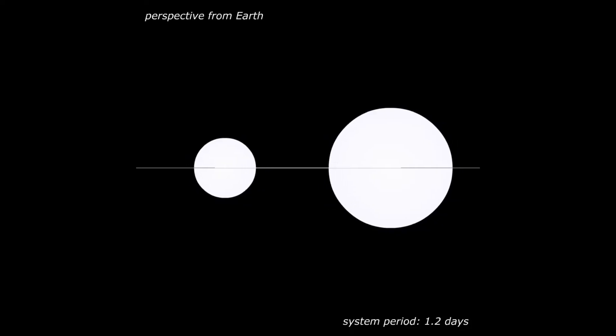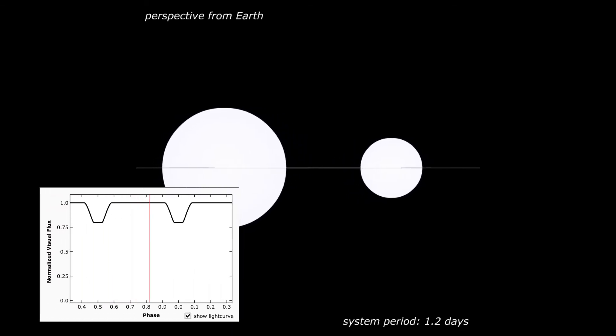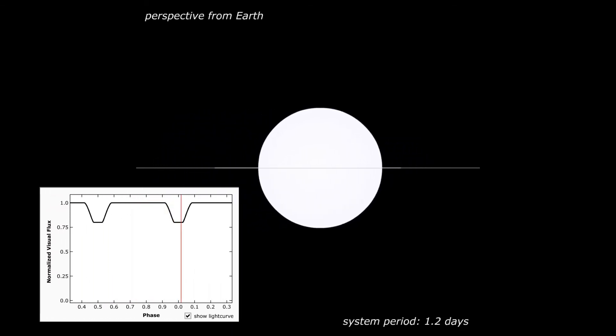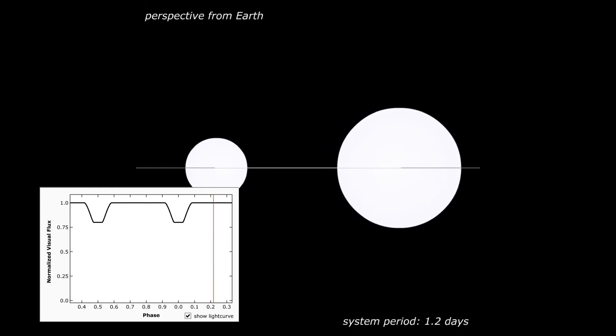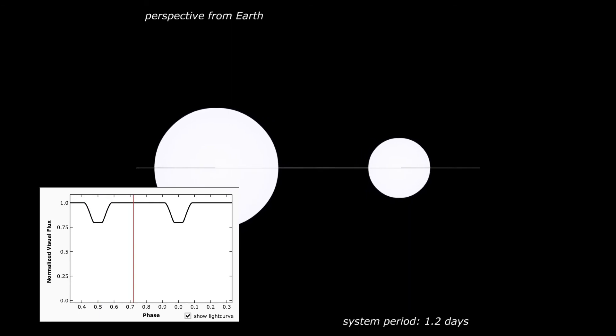This eclipsing binary simulation shows a fourth broad type of eclipsing binary light curve, stars of similar surface temperature but of different sizes, that we can't easily emulate with our demonstration. Note that here we get flat-bottomed eclipses of the same depth.